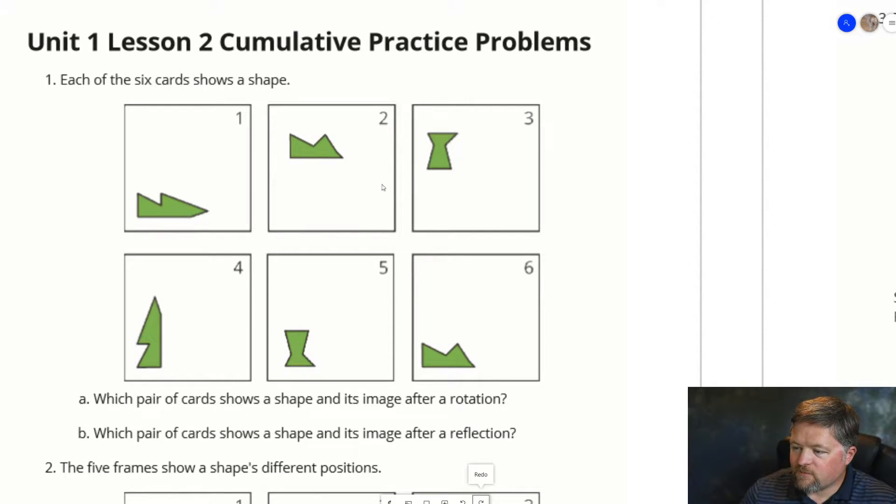Let's look at how these kind of go together. Well, 1 and 4 look like the same shape. 2 and 6 look like the same shape. And 3 and 5 look like the same shape.